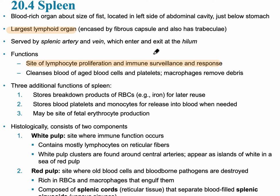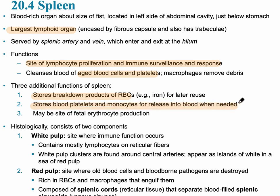The spleen also has a blood function: it cleanses the blood of aged blood cells and platelets. Three additional functions are that it stores breakdown products of red blood cells, specifically iron for later reuse, and it stores platelets and monocytes for release into the blood when needed.